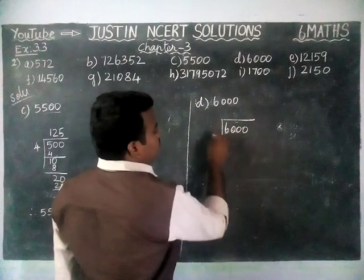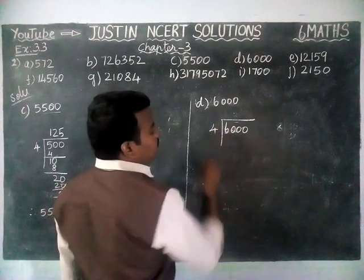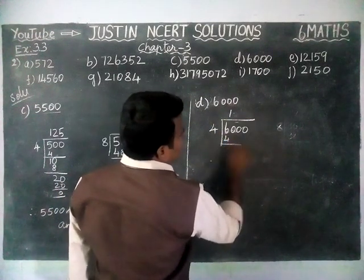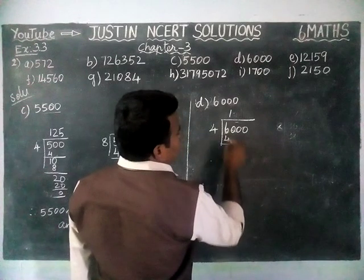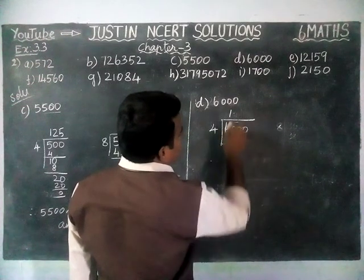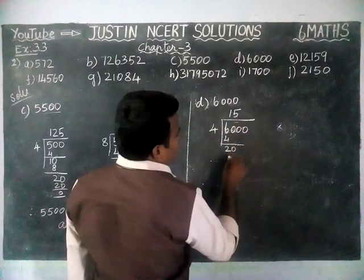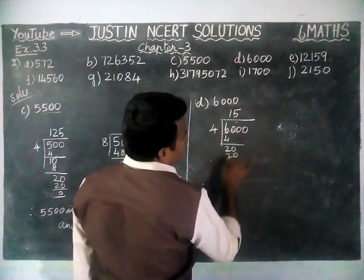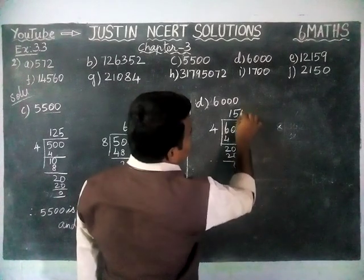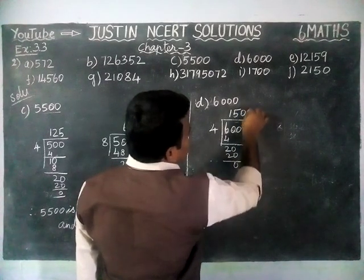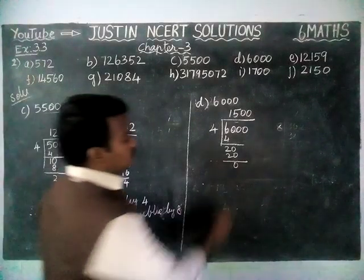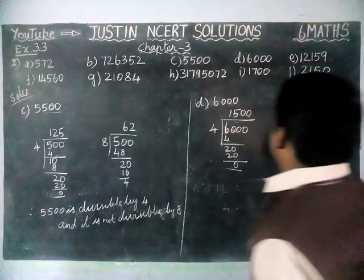Dividing 6,000 by 4: in 6, we have 1 four, remaining 2, giving 20. 5 fours are 20, remaining 0. Adding the remaining zeros gives 1,500. So this number is divisible by 4.